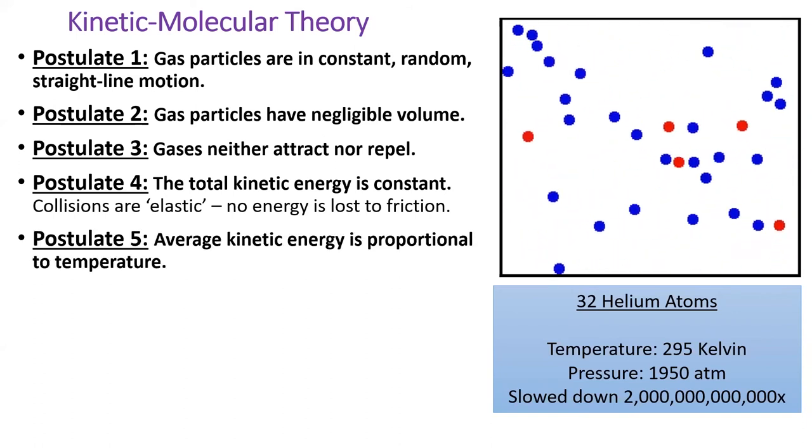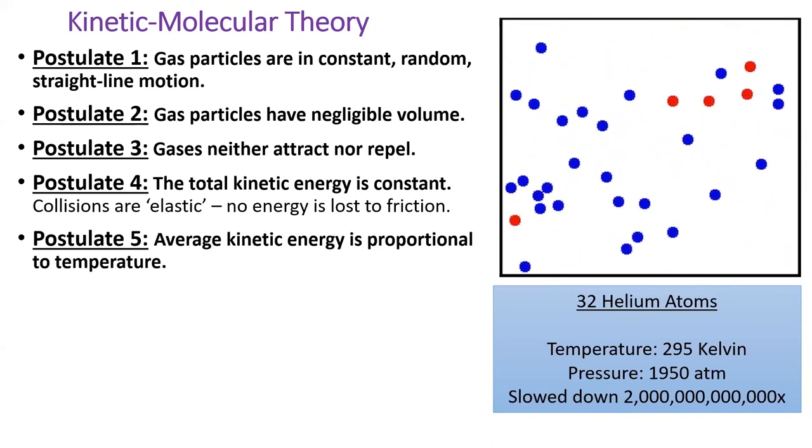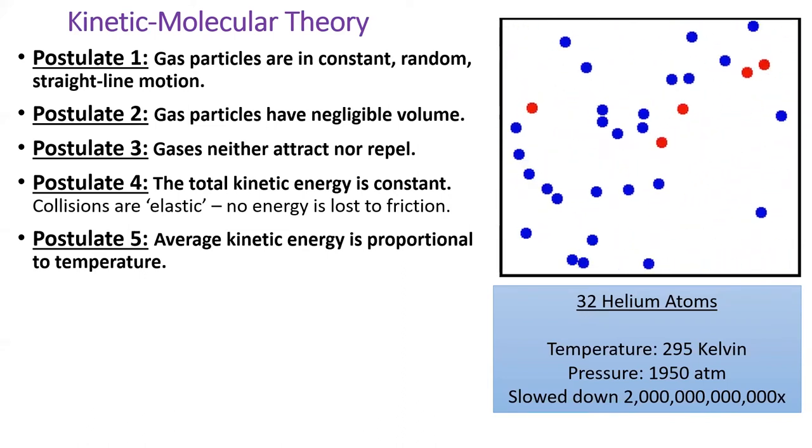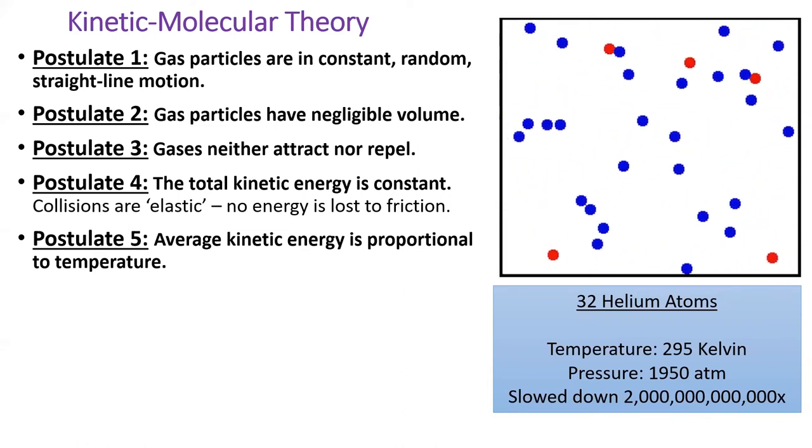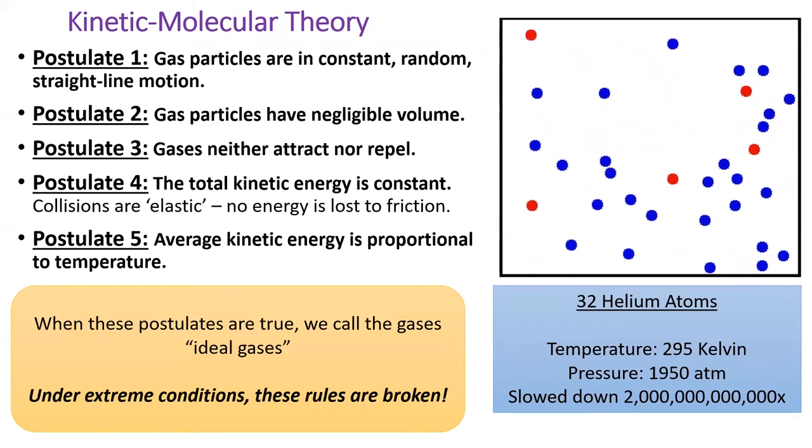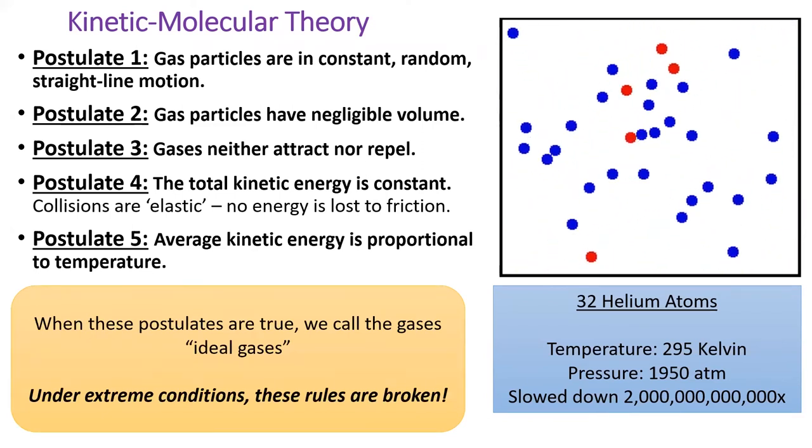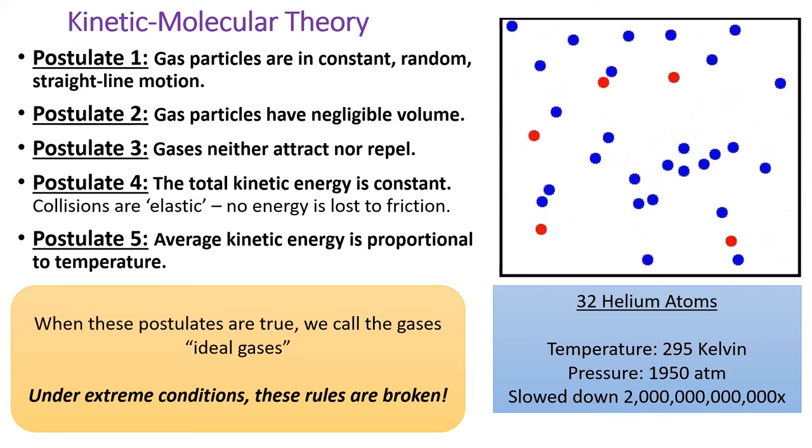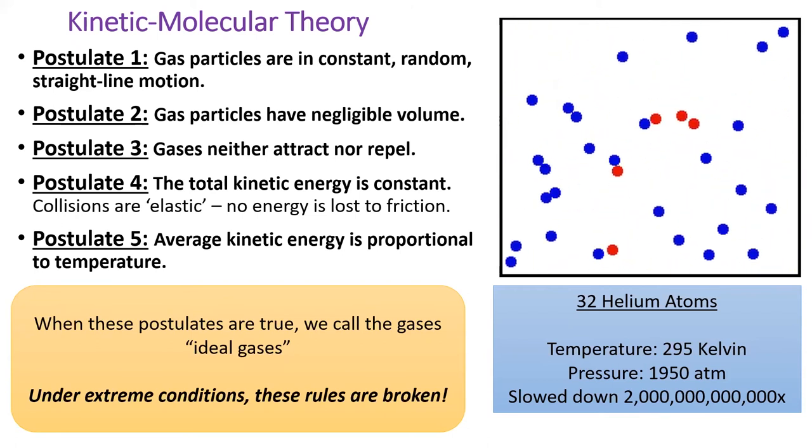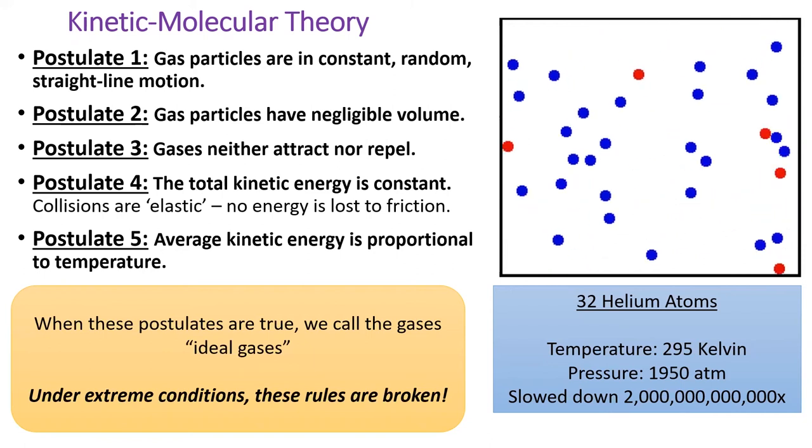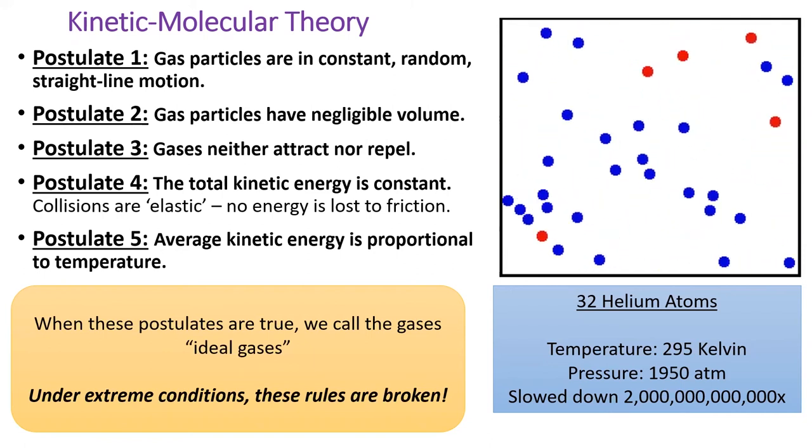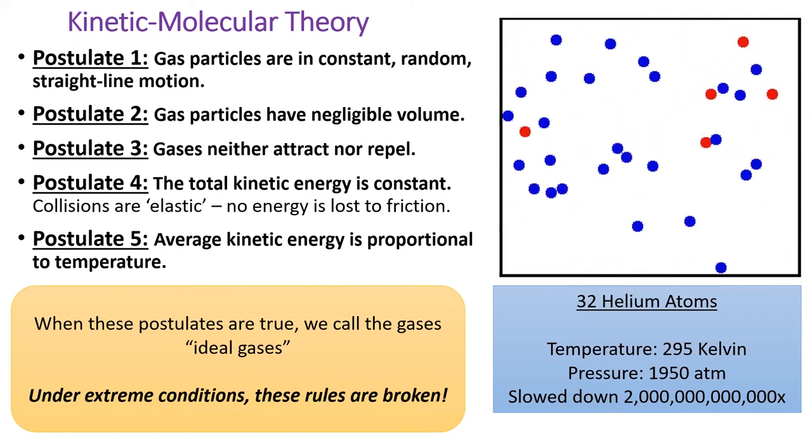Lastly, the average kinetic energy of the gas particles is proportional to their temperature. When these five postulates are true, we call the gases ideal gases. Gases behave ideally in most conditions that humans are used to, but we'll see in the next section that these assumptions break down at very high pressures and very low temperatures.